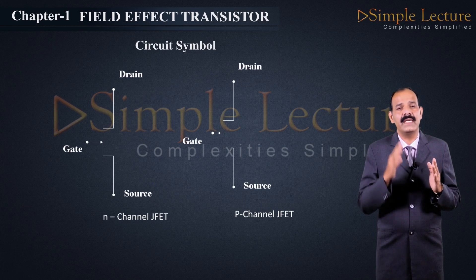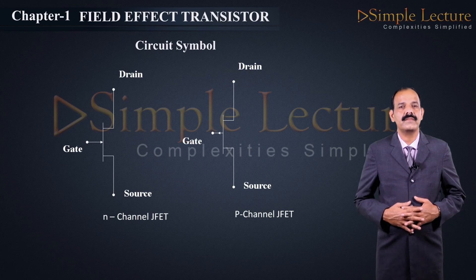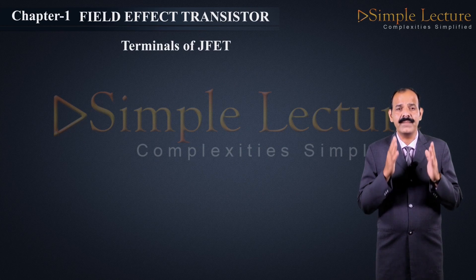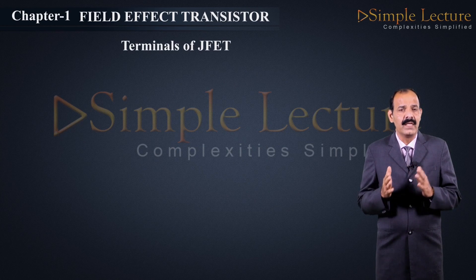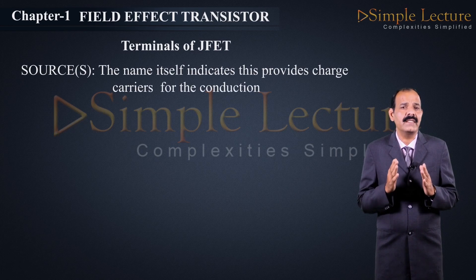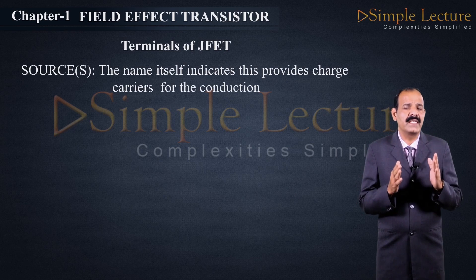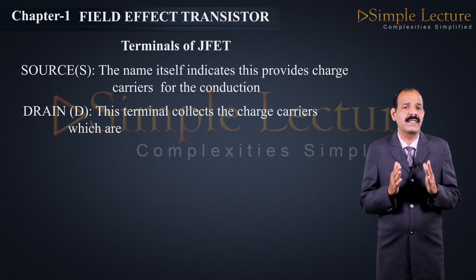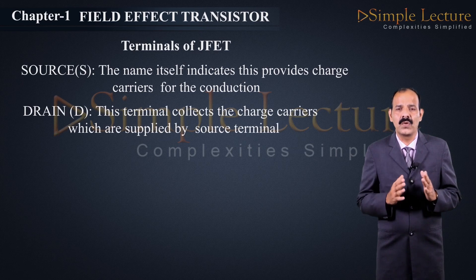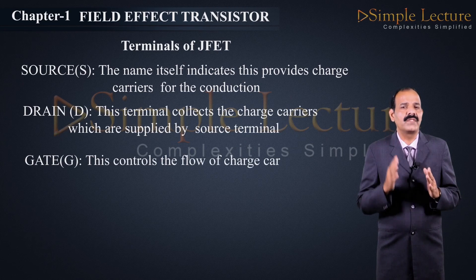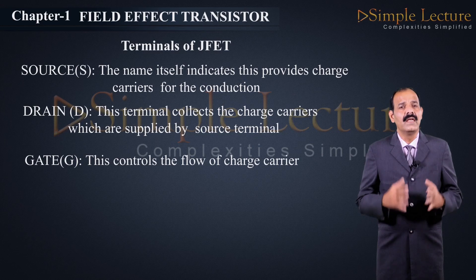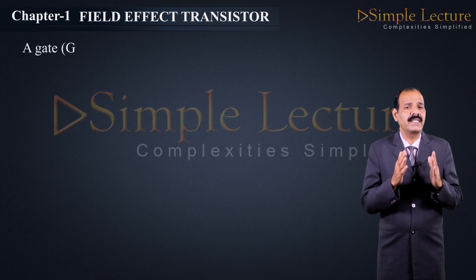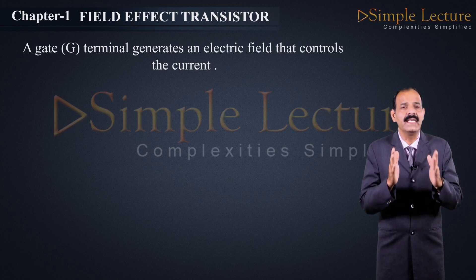The circuit symbols of N-channel JFET and P-channel JFET are shown. The FET consists of three important terminals: source, drain, and gate. The source terminal provides majority charge carriers for conduction. The drain terminal collects the majority charge carriers supplied by the source. The gate controls the flow of charge carriers. Charge carriers always move from source to drain, and the gate generates an electric field that controls the flow of current.